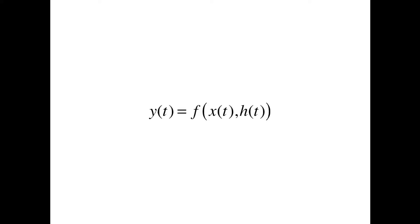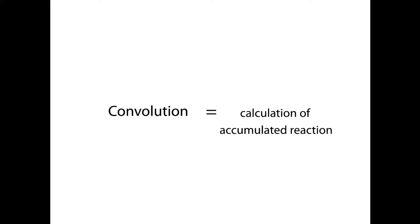An impulse response simply denotes the output of a system when the input is the impulse function. The output can be calculated from the input and the impulse response, where the function f is the convolution. Convolution is an operation that calculates accumulated reaction.